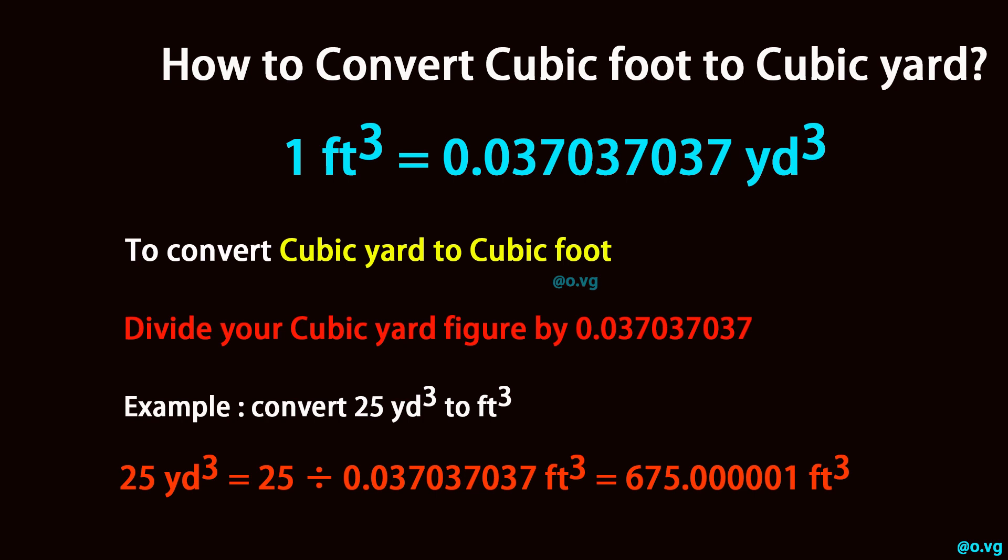Example: Convert 25 yd³ to ft³. 25 yd³ equals 25 ÷ 0.037037037 ft³ = 675.00001 ft³.